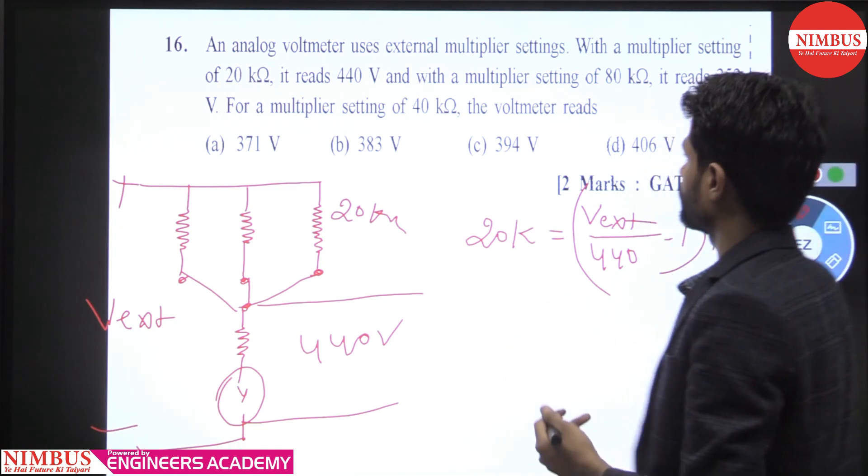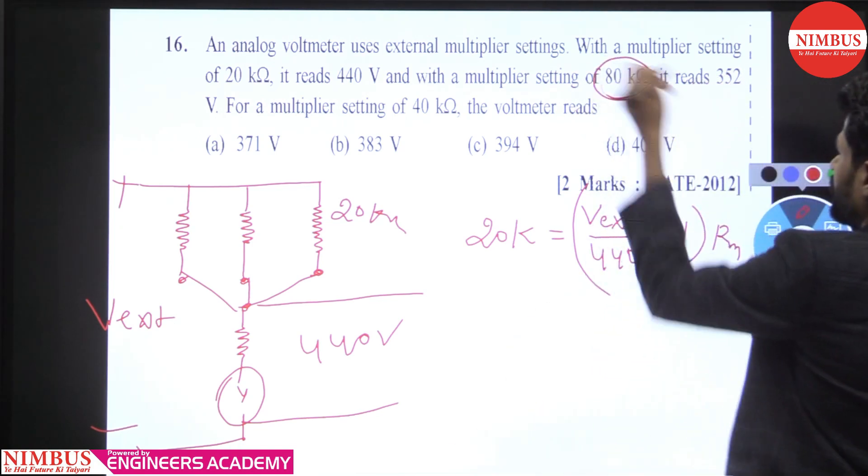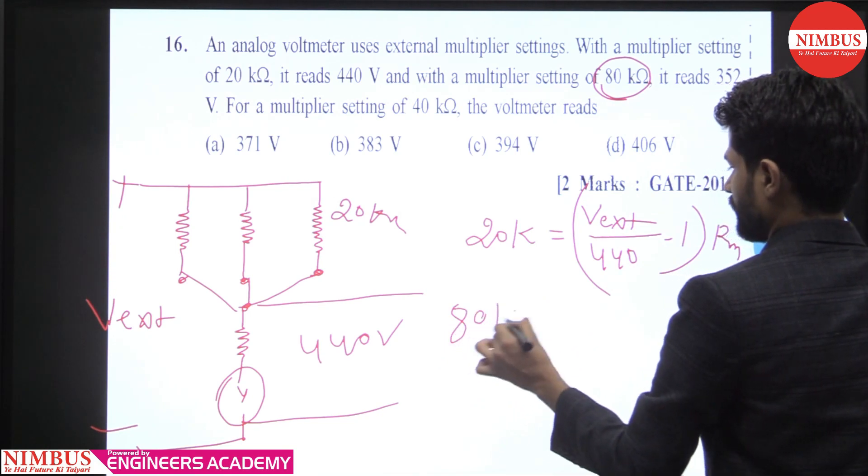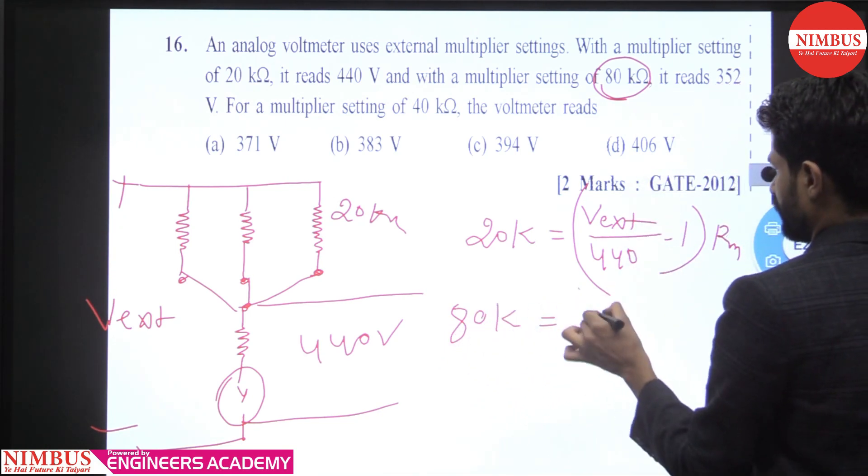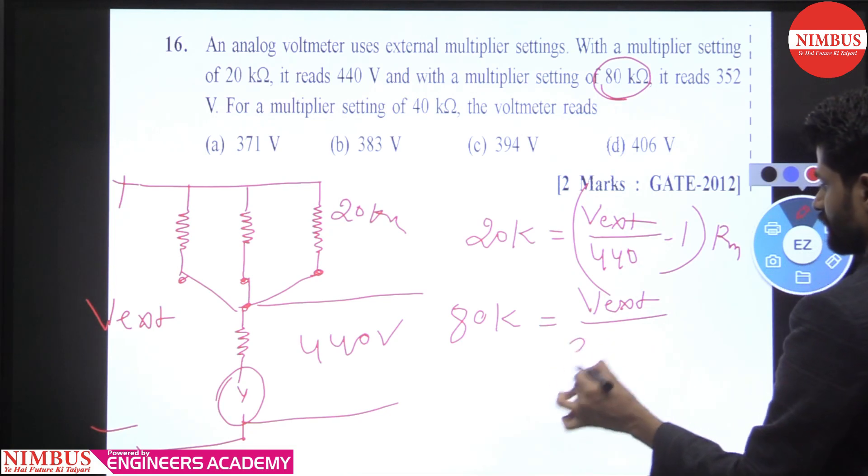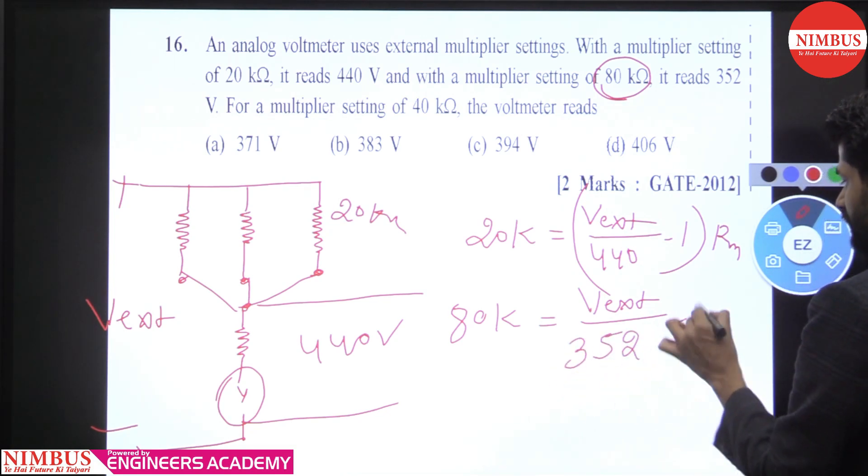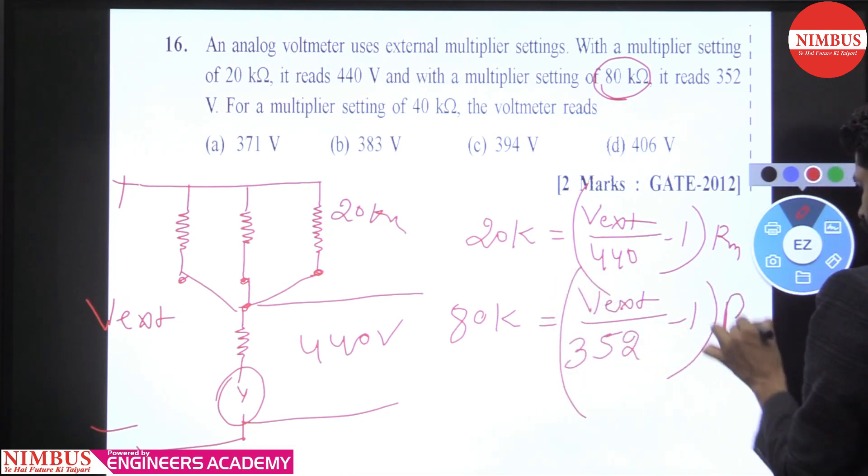Isi tariqe se, hum log kis ke likhenge - 80 kilo ohm ke likhenge. Aur kitna aayega, V extent, kitna read kara raha hai - 352 minus 1 into Rm, right.